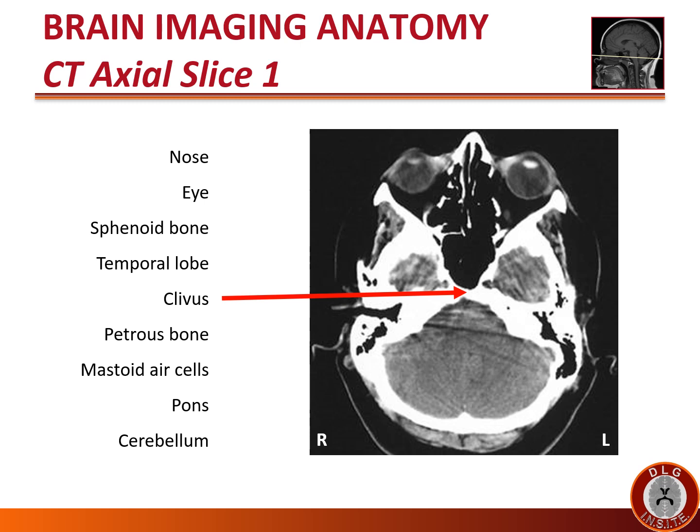The clivus extends up all the way to form the sella turcica. In addition, the sixth nerve — cranial nerve six — exits mid-pons and travels up the clivus before entering the cavernous sinus.